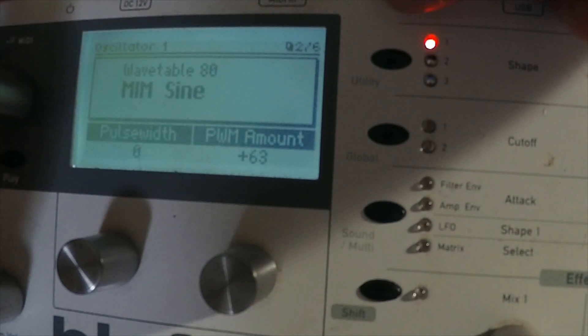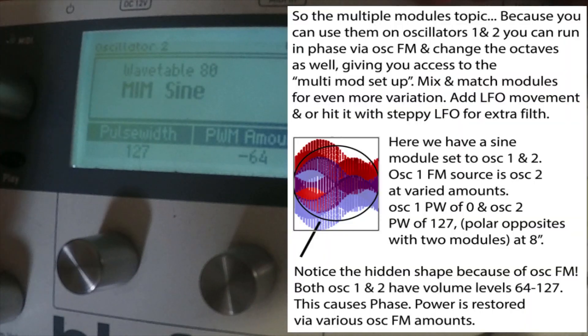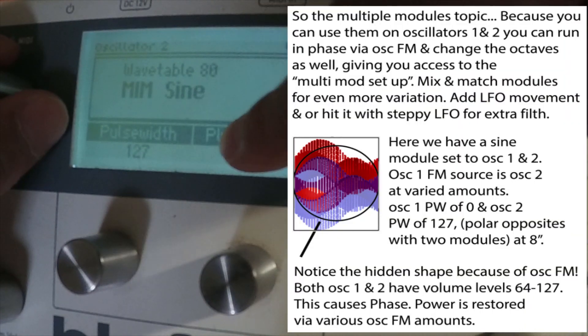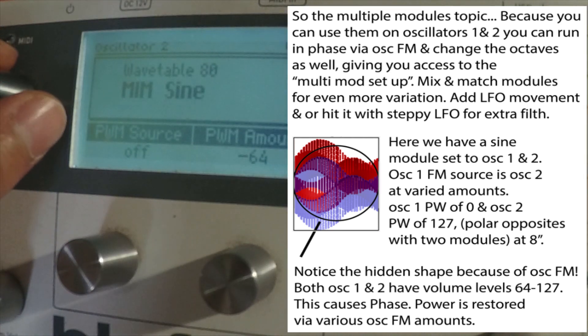Oscillator one is zero on the pulse width, oscillator two is 127 - that's polar opposites. Pay no attention to the pulse width amount right now because the LFO or whatever is discussed is not even set up on there.